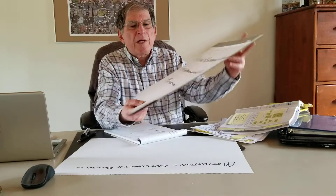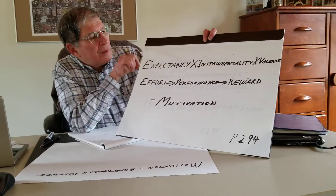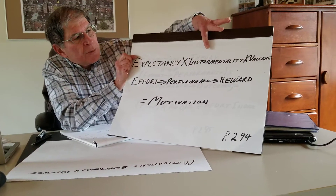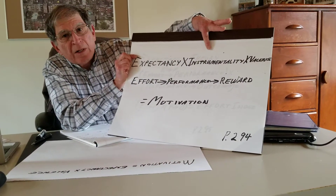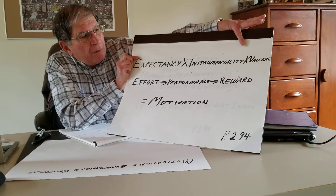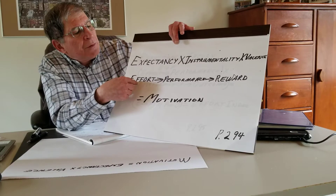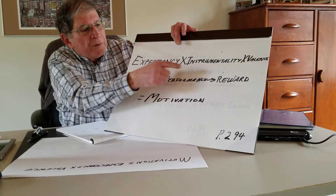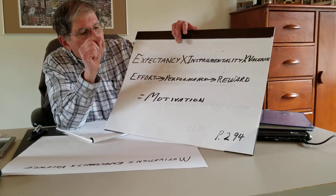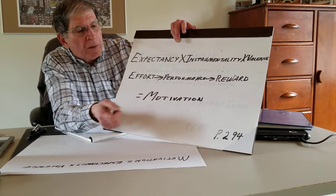If you go over to page 295, they also go into more detail on the expectancy motivation of the individual to do the work. It really boils down to: expectancy times instrumentality — that is how you're going to do it — times valence, the value of something. This leads to effort. Effort leads to performance. That leads to some sort of a reward. And that is your motivation model.